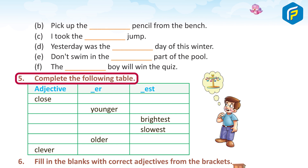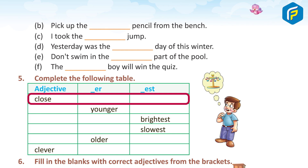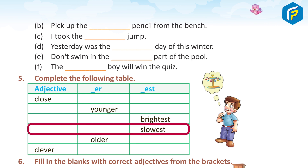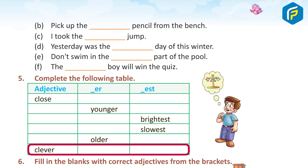5. Complete the following table. Adjective, ER form, EST form. Close - Closer - Closest. Young - Younger - Youngest. Bright - Brighter - Brightest. Slow - Slower - Slowest. Old - Older - Oldest. Clever - Cleverer - Cleverest.